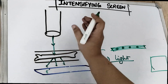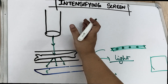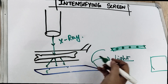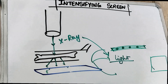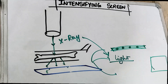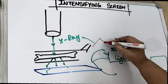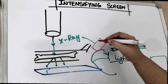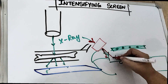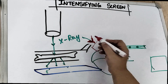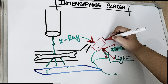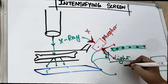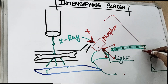Today's video we are going to talk about the intensifying screen — where we use it while converting x-ray radiation, the photon radiation, into light radiation. We have got a substance called phosphor. When we pass this x-ray radiation through phosphor, this substance converts the x-ray radiation into light radiation. This procedure we call luminescence.